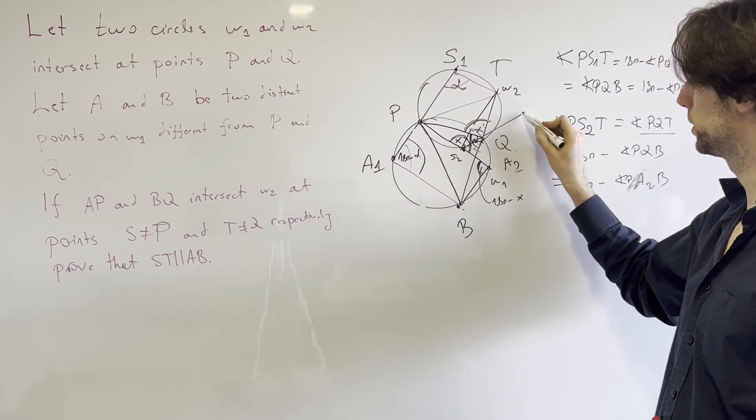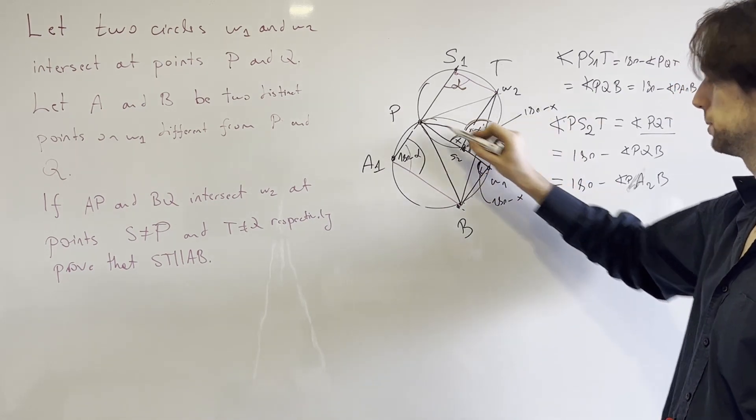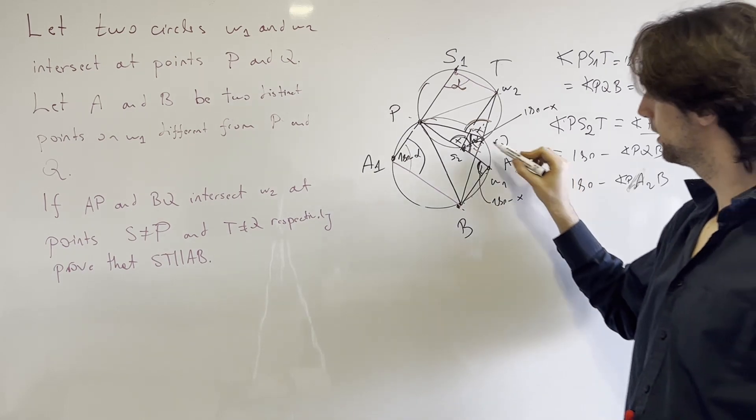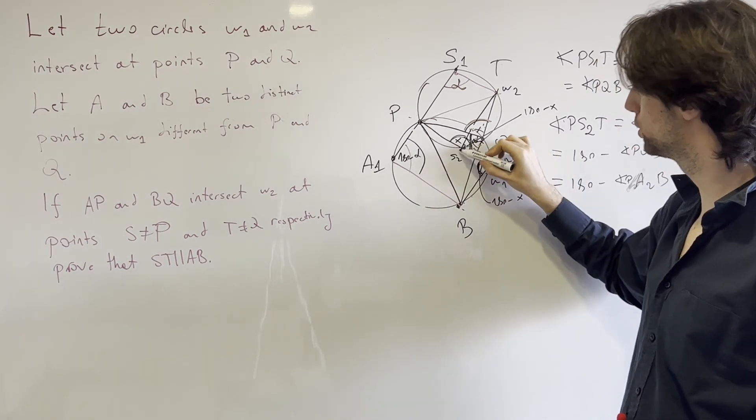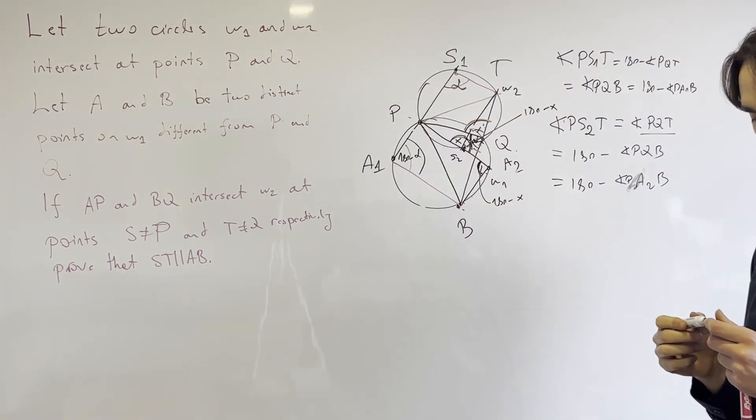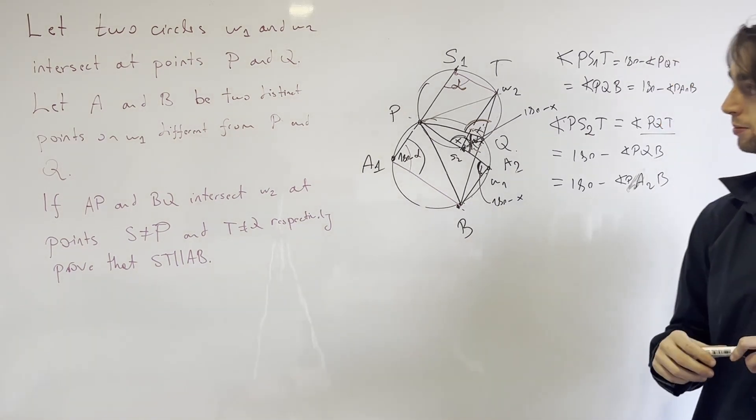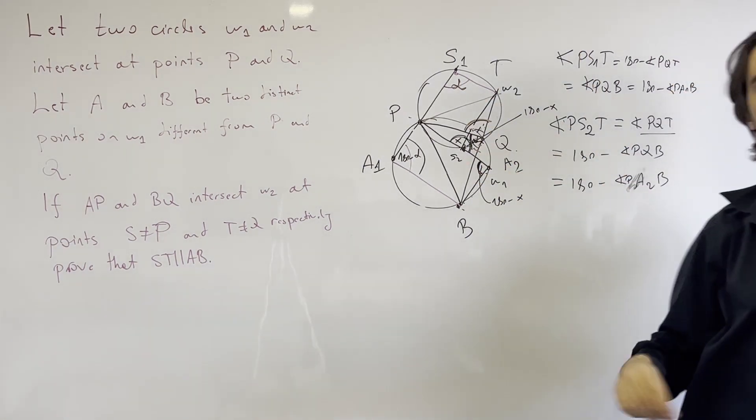Also we can say this angle here is 180 minus x because these are on a line. And now this angle is equal to this one, so these two are parallel to each other.